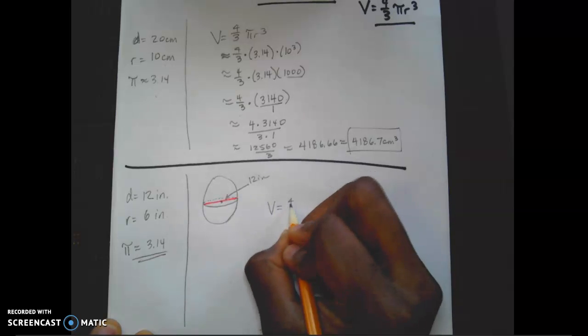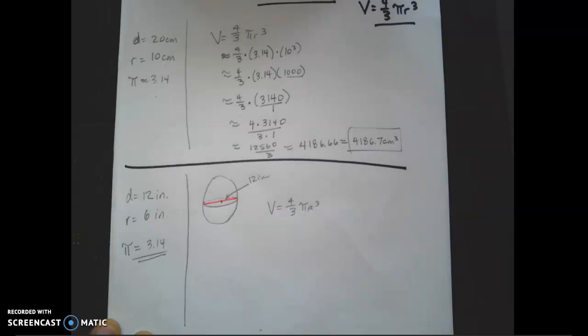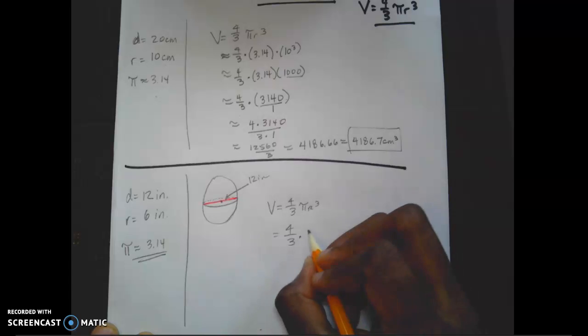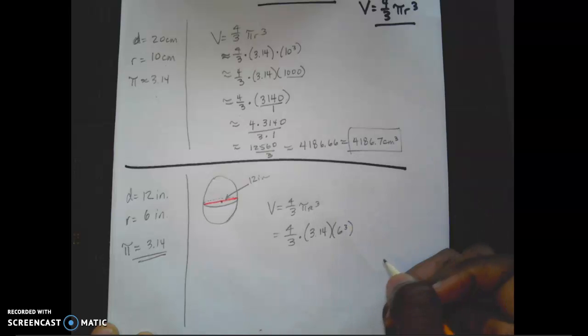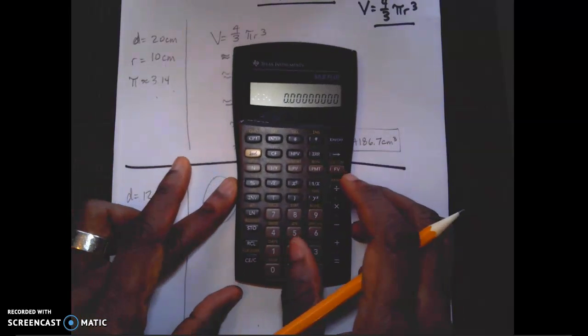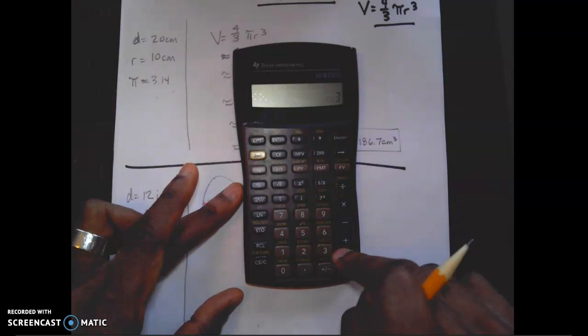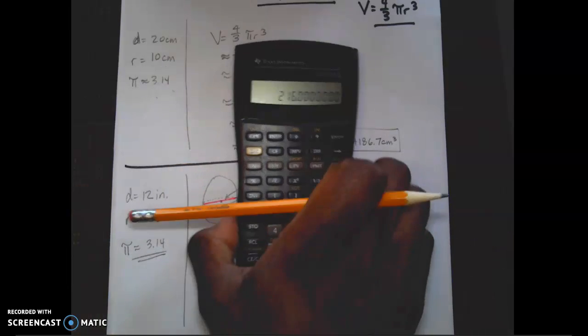So writing down my formula one more time. There's really no way around this. Even I, as a math teacher, I like to have my formula written down. There's just no way around it. So now, 4/3 multiplied by 3.14 times our radius, which is 6 cubed. Now, remember, the cubed value is 6 times 6 times 6. If you want to do it on the calculator, you have a way to do it that is 6. I'm going to hit my button here. It may not be the same as yours. That's 3 as my exponent. That is going to be 216.